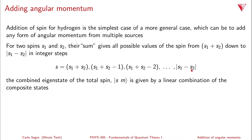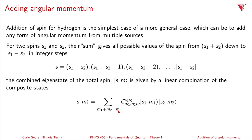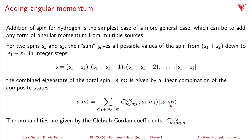The combined eigenstate of the total spin, given by a ket identified with the total spin and total magnetic quantum number, is given by a linear combination of composite states for S1 and S2. This is a sum over M, where M equals M1 plus M2, of the Clebsch-Gordon coefficient — identified by five indices M1, M2, M, S1, and S2 — times the product state of S1, M1 and S2, M2. The probabilities of each of these product states are given by the Clebsch-Gordon coefficient squared.